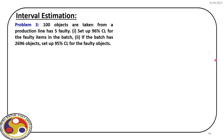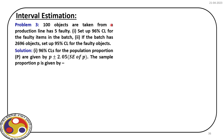Let us take a different example. We have 100 objects taken from a production line showing 5 faulty items. The problem is to set up a 96% confidence limit for the faulty items in the batch. We need to find the confidence limit for p, and for 96% the z factor is 2.05 (compared to 1.96 for 95%), times the standard error of p.